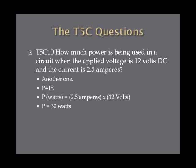How much power is being used in a circuit when the applied voltage is 12 volts DC and the current is 2.5 amperes? Using the straight P equals IE formula, substituting in the current I of 2.5 amperes and multiplying by the voltage E of 12 volts, you get P equals 30 watts. And you're allowed to bring a calculator to the exam.